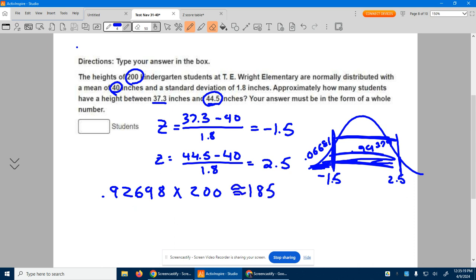Maybe round up to 186, but that's our answer. About 185 kids are between here and here. In other words, basically 185 kids are between 37.3 inches and 44.5 inches.